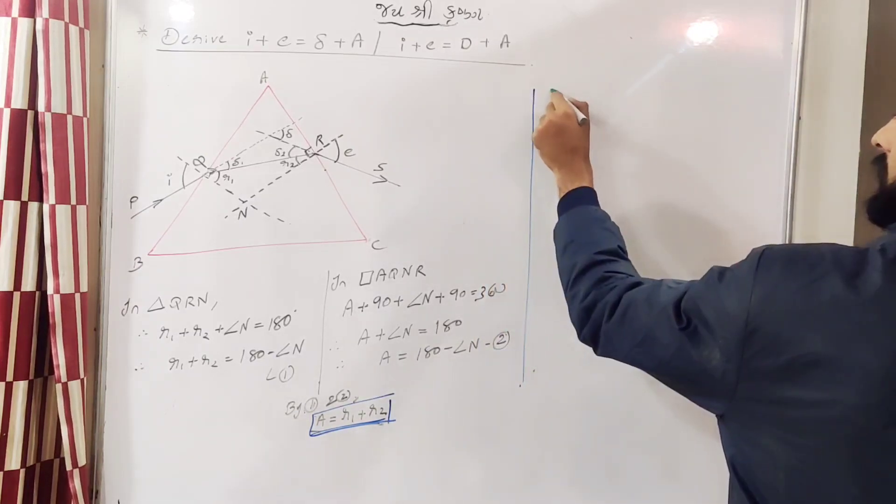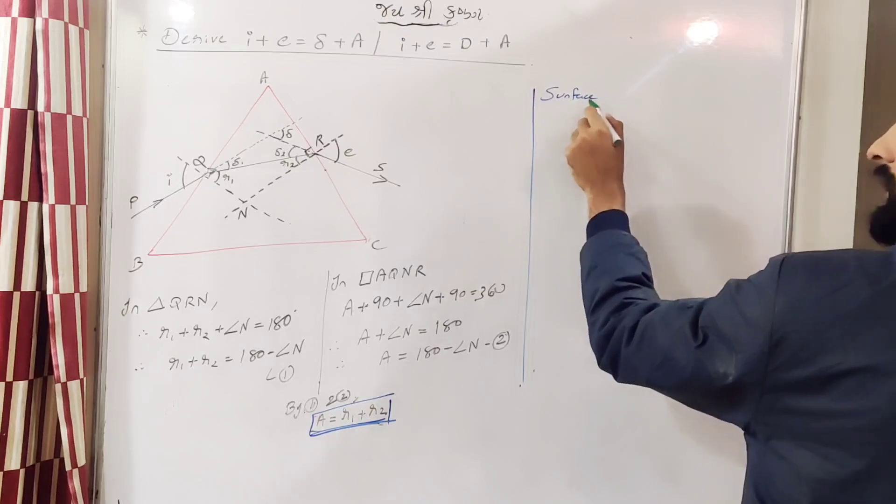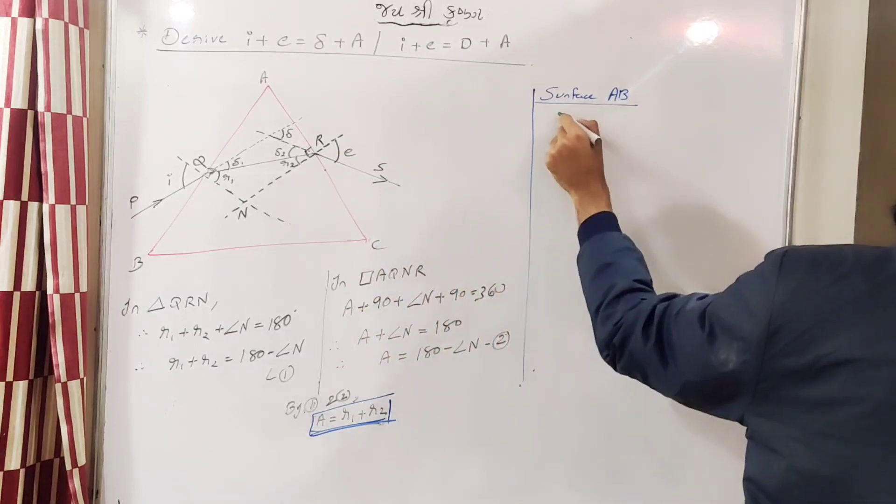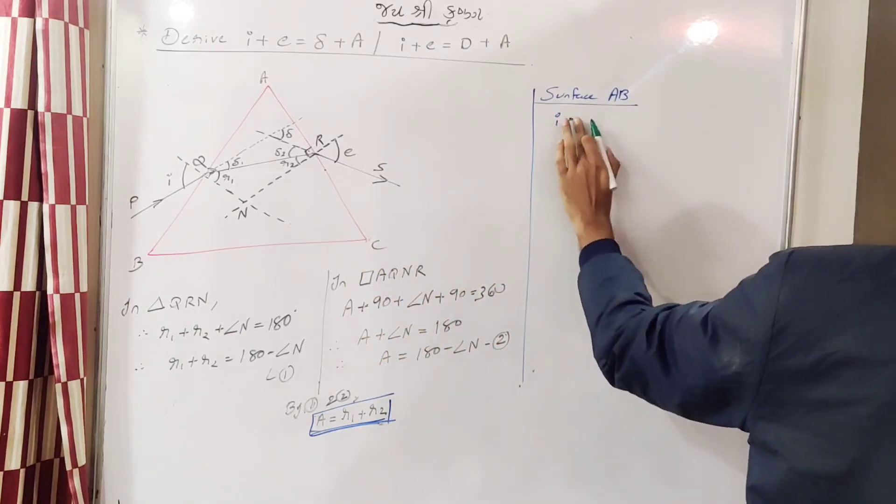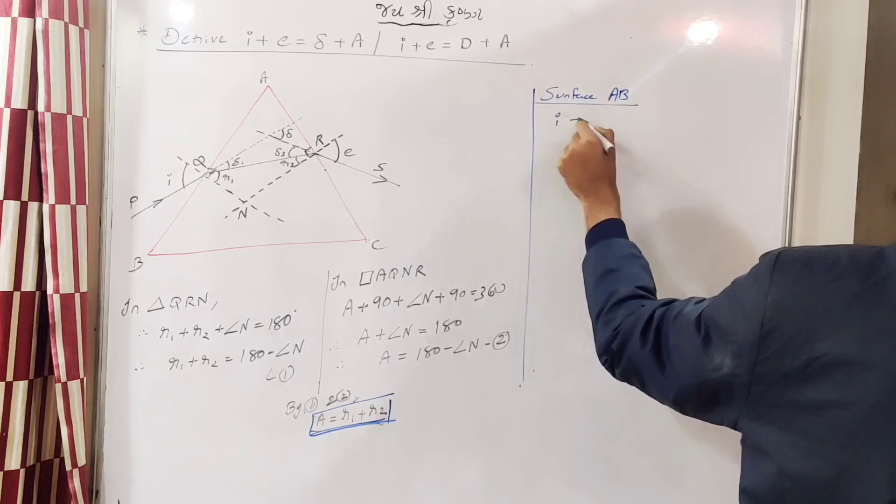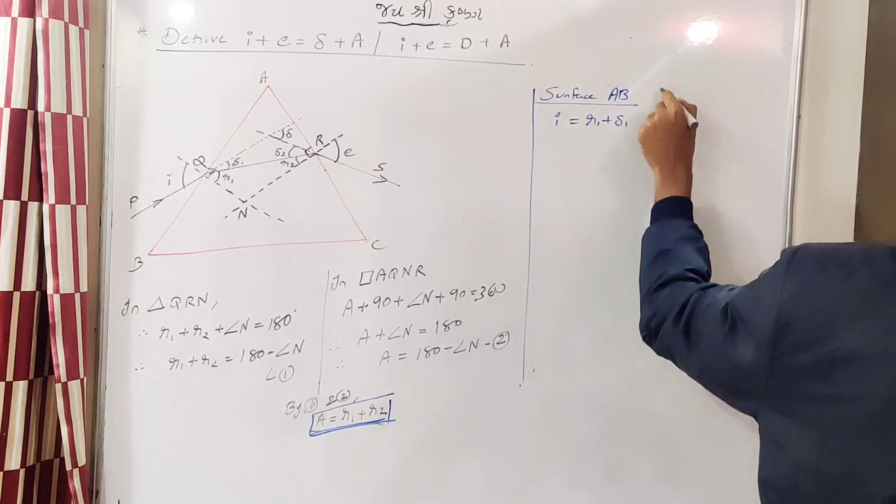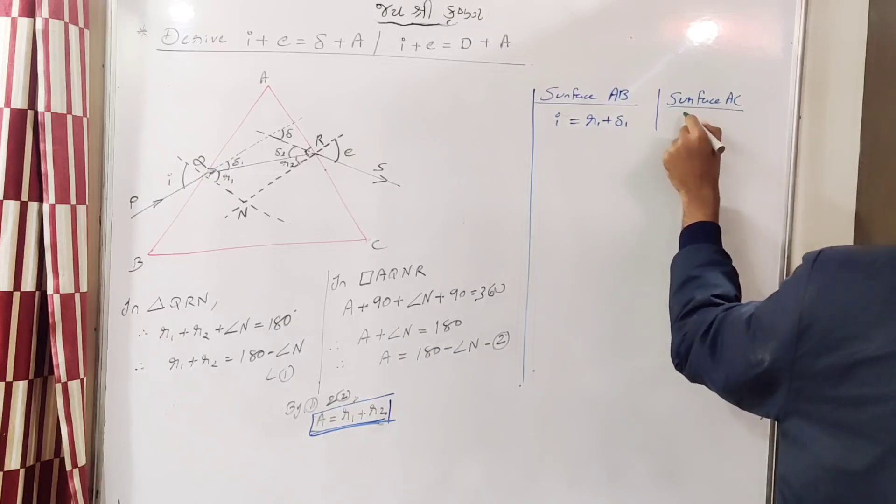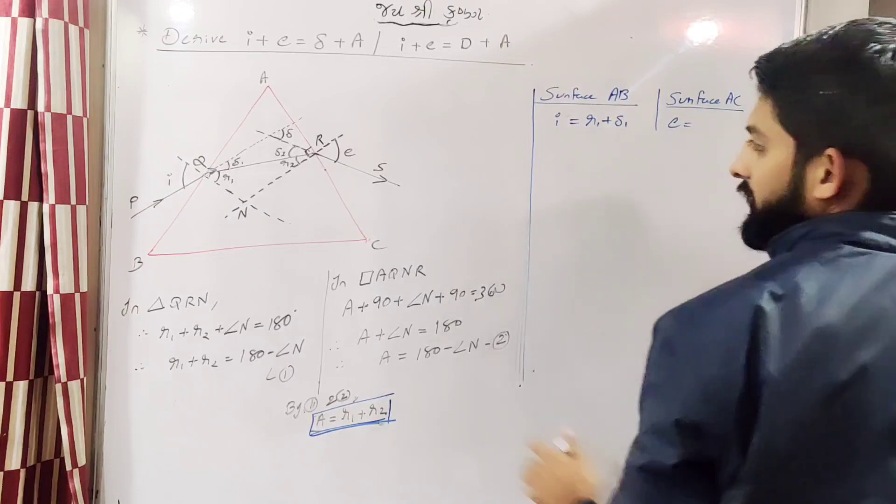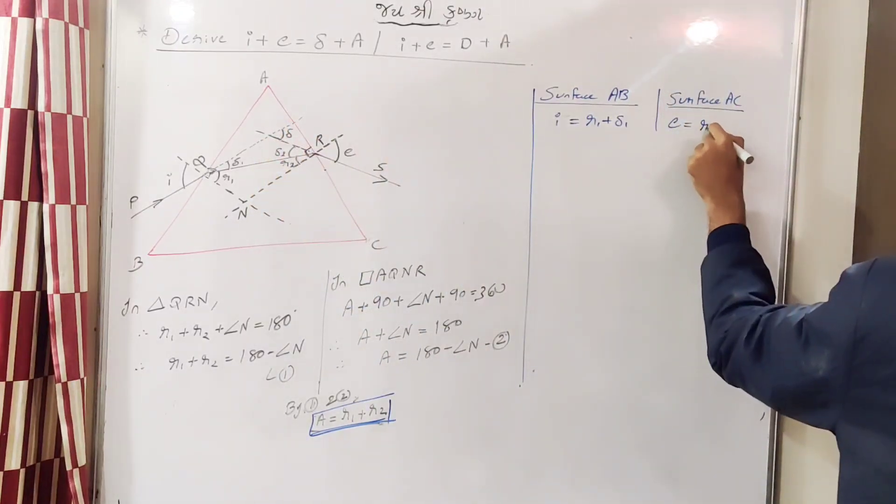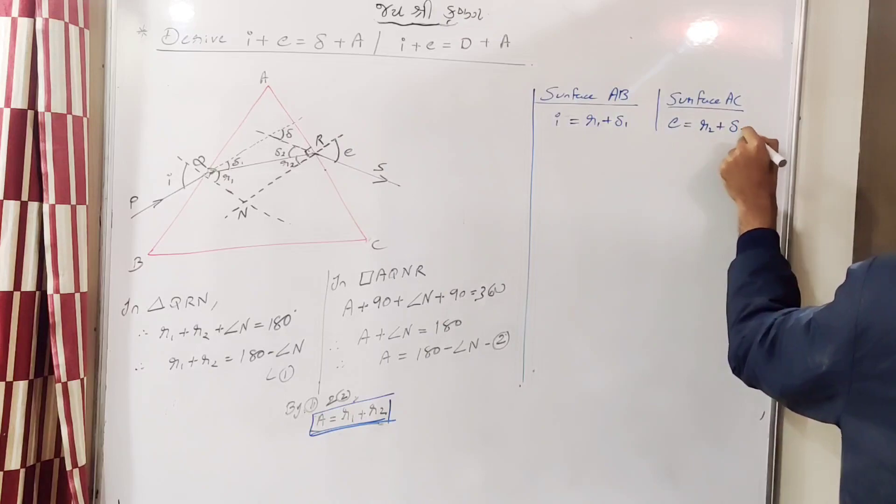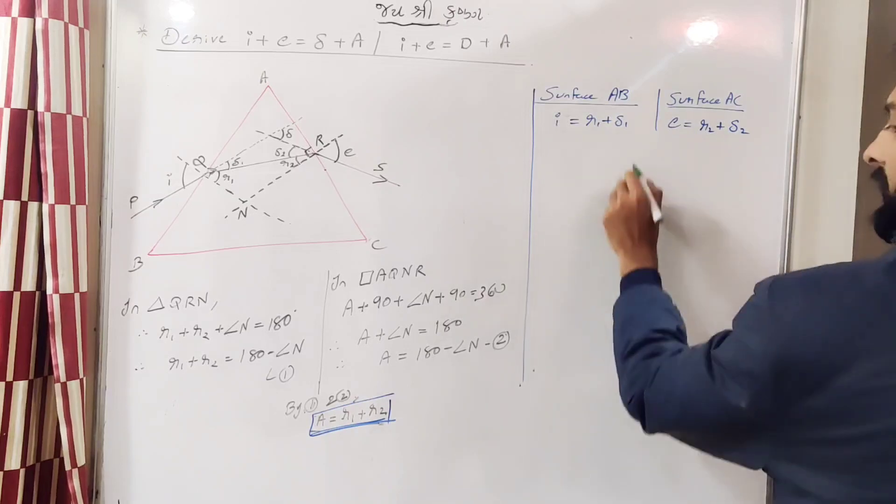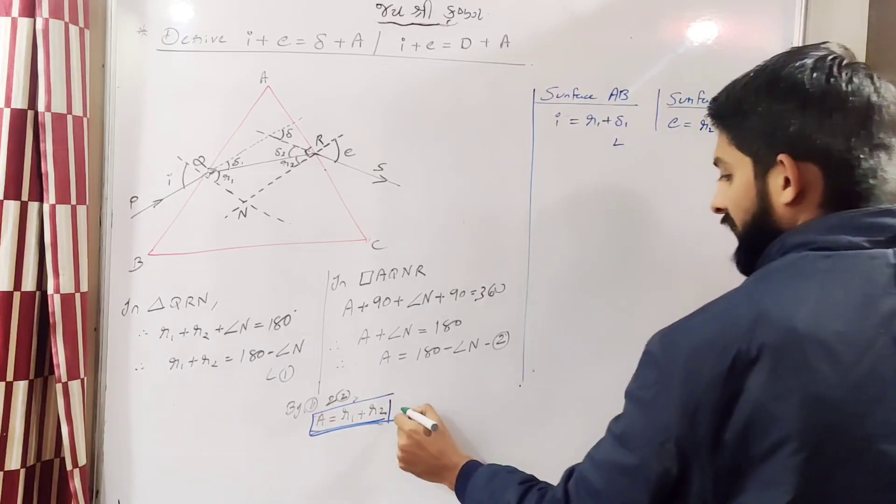Now see, for surface, consider the surface AB. So you will find I is equal to R1 plus delta 1. And for the surface AC, you will get E is equal to emergent angle equal to delta 2 plus R2. This is simple vertically opposite angles. Let's say this is 3.